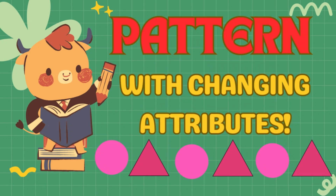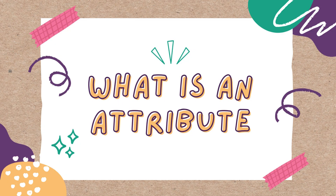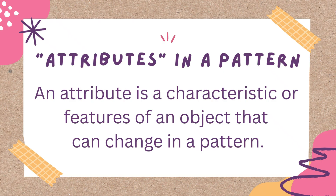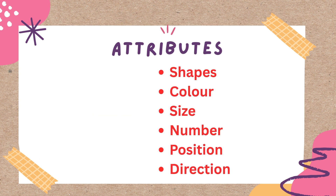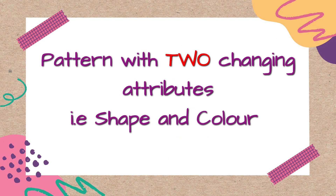Hello kids, today we are going to have fun learning about patterns — but not just any patterns. In this video, we will explore patterns with two changing attributes. Do you know what an attribute is? An attribute is a feature of an object, like its color, shape, or size, that can change in a pattern. An attribute in a pattern may be its shape, color, size, number, position, direction, and others.